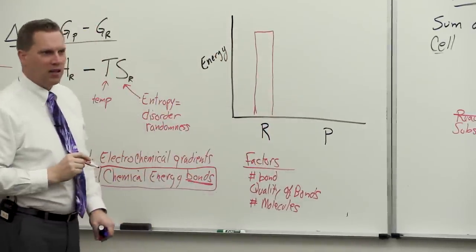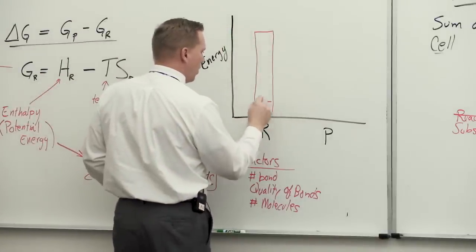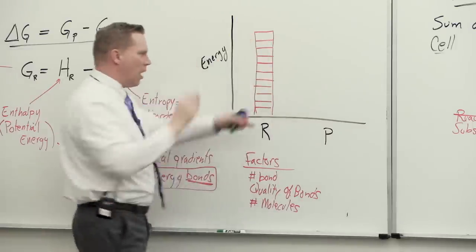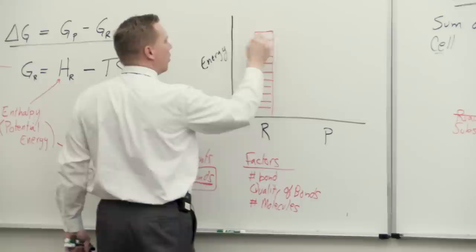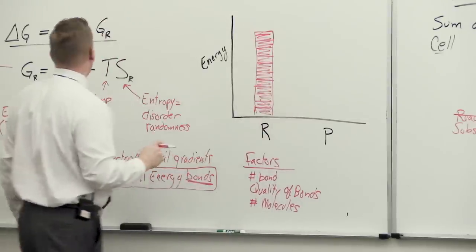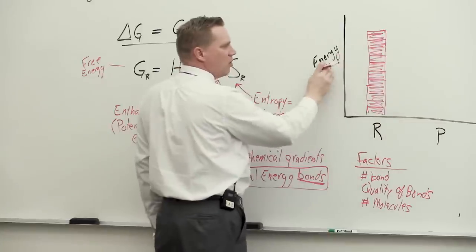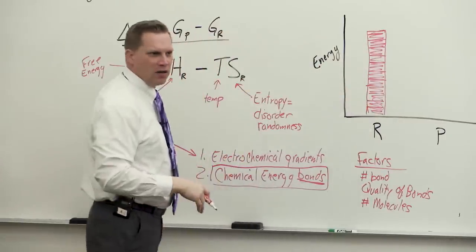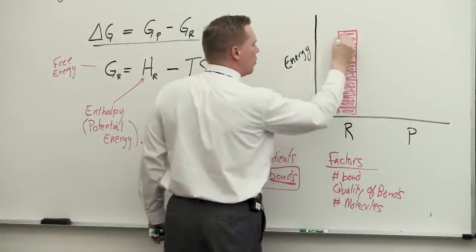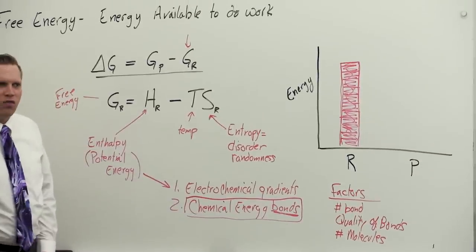We can represent the energy of our reactants as a bar or column — each molecule contributes a certain amount of energy, and when you add them all up you get some total free energy associated with the reactants. Likewise, we can represent the products with a total free energy as well.